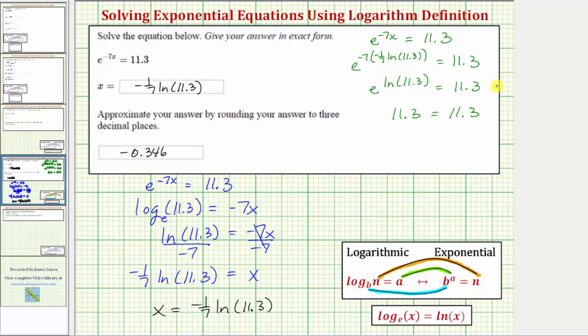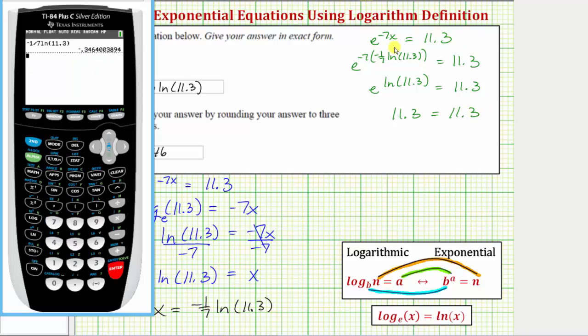But let's also verify it on the calculator. Let's enter the left side of the equation here to make sure this is equal to 11.3. So if we press second natural log, that brings up e raised to the power of, and we enter negative seven. Then in parentheses, we have negative one divided by seven.